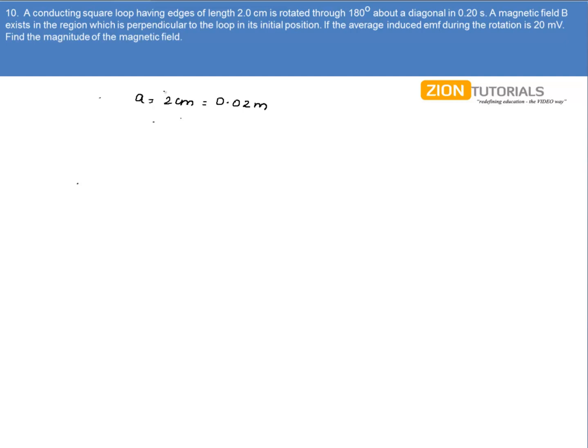Now it is rotated about the diagonal in 0.20 seconds, that is dt or delta t is given by 0.2 seconds. A magnetic field B exists in the region which is perpendicular to the loop in its initial position.